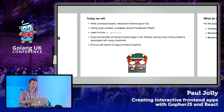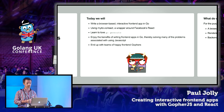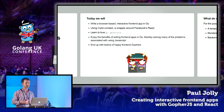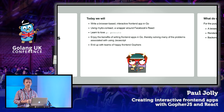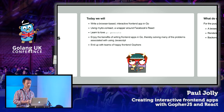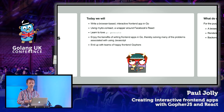We're going to use myitcv.io react, which is a wrapper around Facebook's React JavaScript library. We're going to learn to love Go generate, and if anybody's not used Go generate before, you'll love it by the end of today. We're going to enjoy the benefits of writing our front-end apps in Go, thereby solving many of the problems I just listed with any project effectively written in JavaScript. And then we're going to end up with teams of happy front-end Gophers.